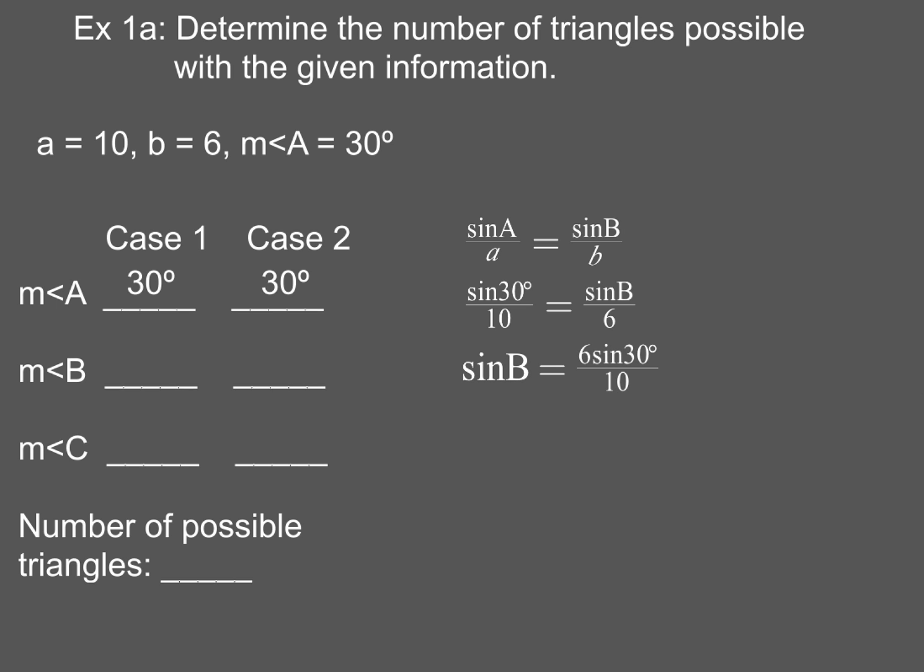As I go through the arithmetic and I go through the algebra and use my calculator to help me solve this, I come up with a value for B to be 17.5 degrees. Now, once I know the measure of angle B is 17.5, I can use a triangle sum theorem to figure out the measure of angle C, which would be 132.5 degrees.